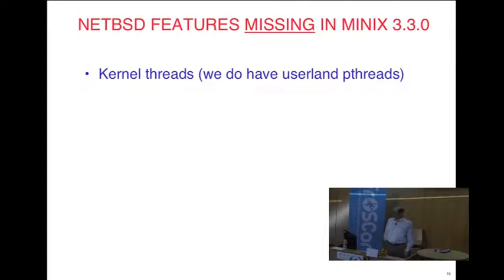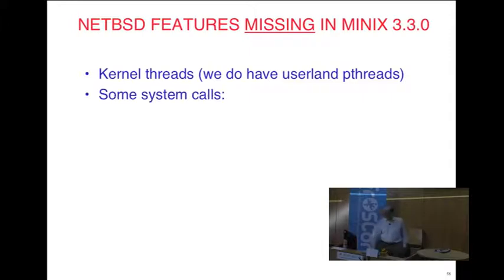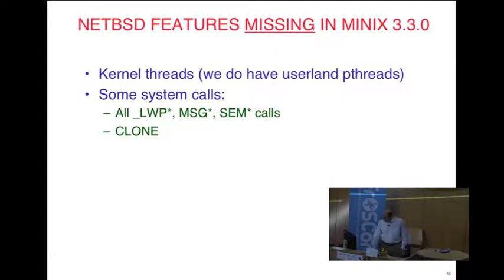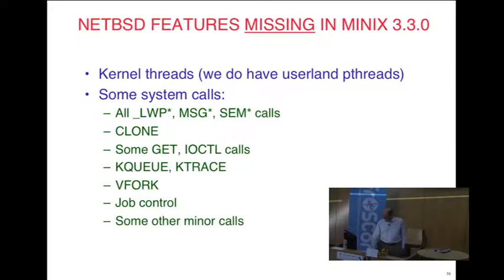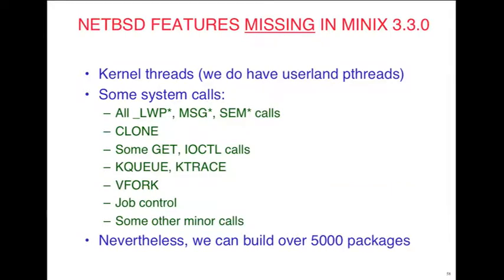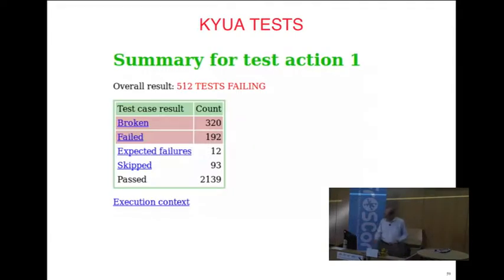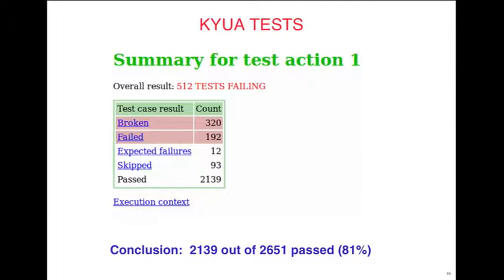Some things we don't have: no kernel threads — we have user-land threads, but things requiring kernel threads are a problem. We're missing some system calls like LWP calls, message queue calls, SEM calls, clone, some getXX calls, kqueue, ktrace, vfork, and job control. Nevertheless, we can build over 5,000 packages. Running the NetBSD QA test: 512 failed and 2,139 passed — basically 81% of QA tests passed. The things that don't work tend to be the more exotic things, but we're a large way along the road.